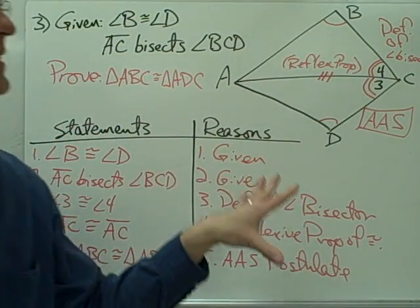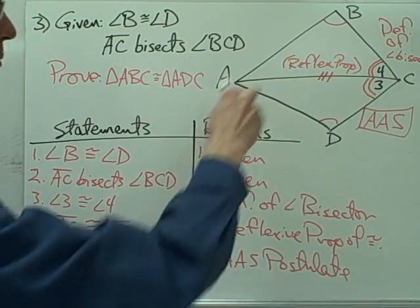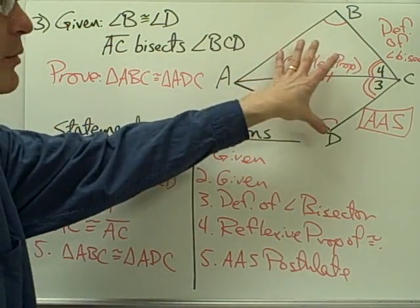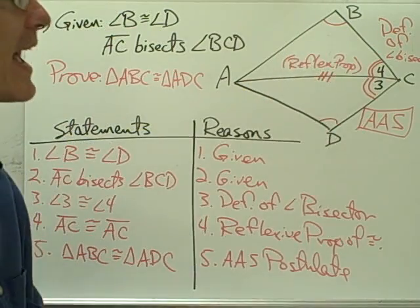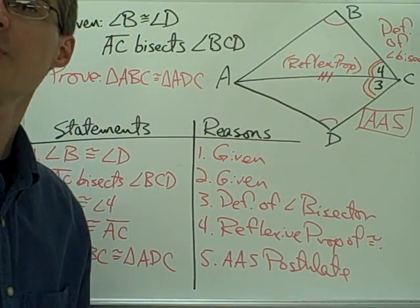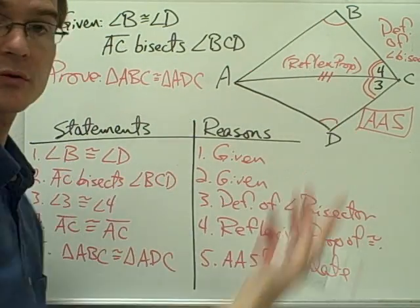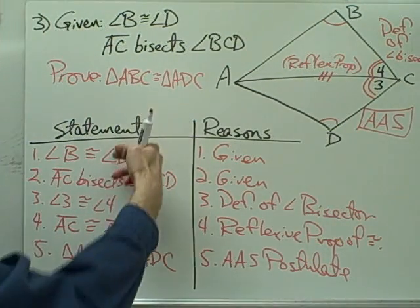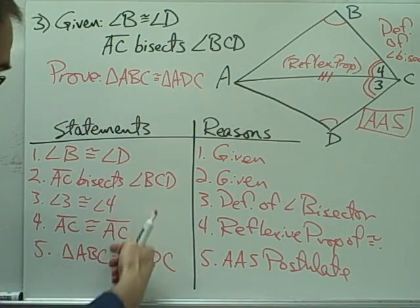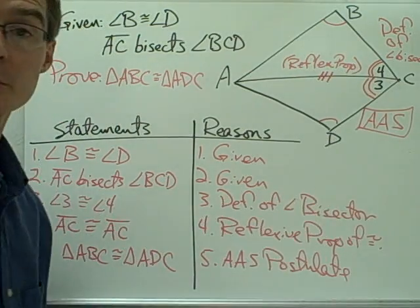Hopefully you're starting to see that the way all these triangle proofs go is you mark up your diagram with the information that you have, then you decide which triangle congruence postulate you're going to use to show those two triangles are congruent, then you just fill in all the information you need in order to use that particular postulate.